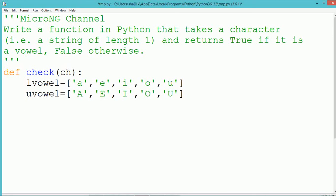Now we are using an in operator. We can check whether the element is present in the list or not. So we check whether ch is present in lvowel or ch is present in uvowel. That means either ch is a lowercase vowel or an uppercase vowel.